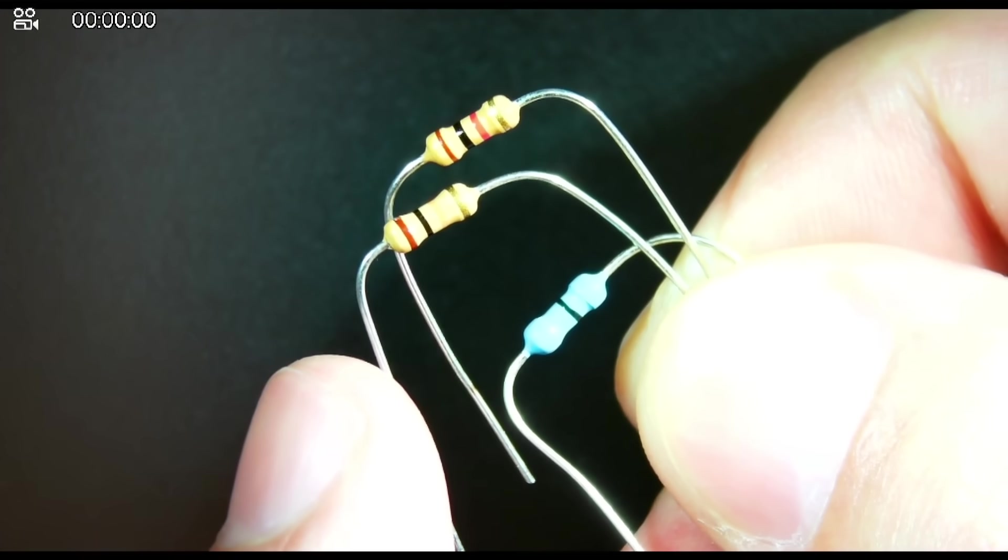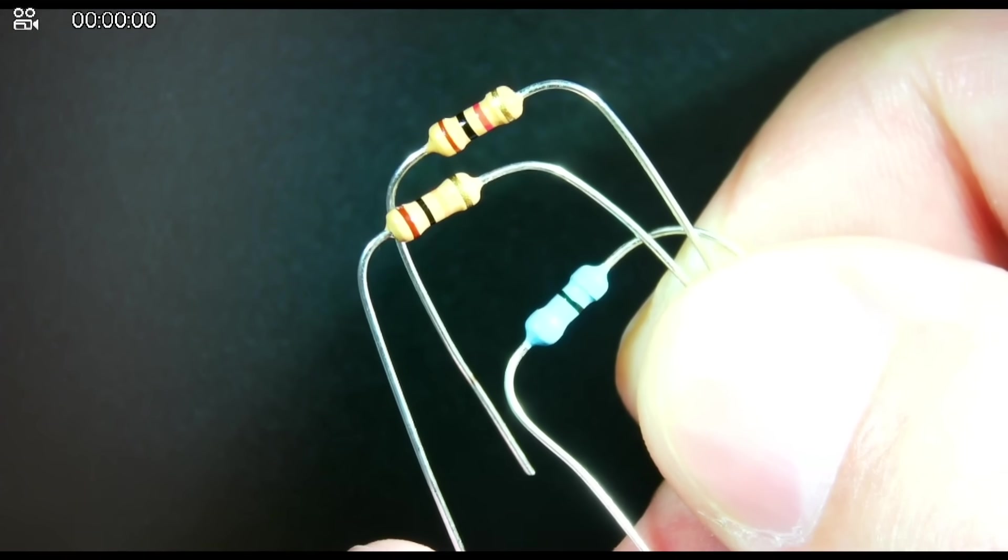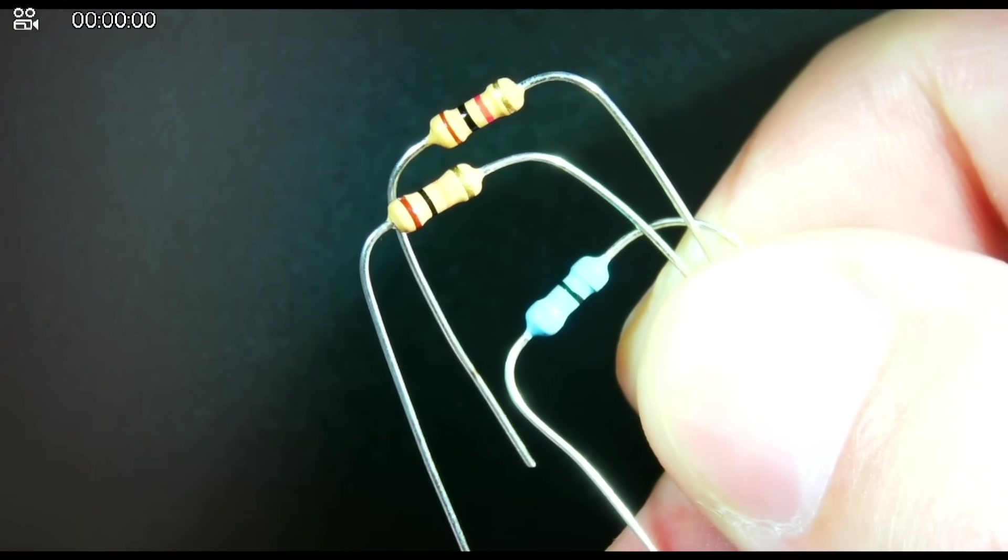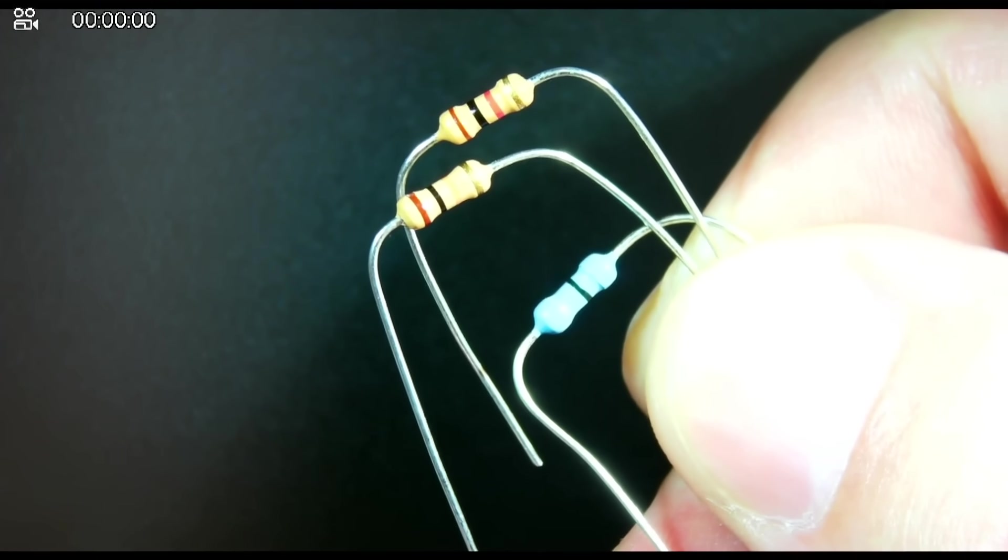This one here is brown, black, and orange, the color of Halloween, and I know that's 10,000 ohms. Those are just tricks that I use to remember some of the really core resistor values.